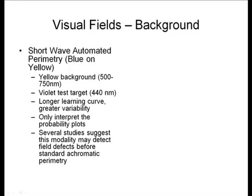Shortwave automated perimetry is blue-on-yellow perimetry. It's basically a yellow background with a 500 to 750 nanometer wavelength and a violet test target of 440 nanometers. The advantage of this test is that it potentially detects glaucomatous damage much earlier than standard perimetry because it preferentially stimulates a certain subset of retinal ganglion cells. However, it's limited because it has a longer learning curve, greater variability, and is a much more difficult test for patients to take. This is available in the clinic and you can have our technician run the visual field test on you so that you can experience it.